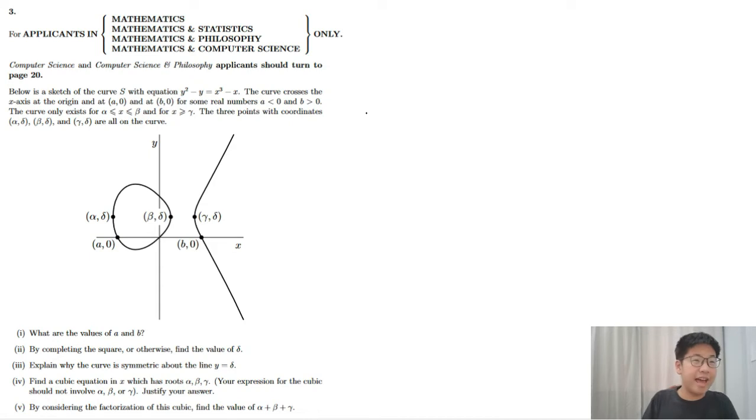Since they all cross the x-axis, we substitute y equals 0. Therefore, 0 equals x cubed minus x. Factorizing the right side, we get x times x squared minus 1.